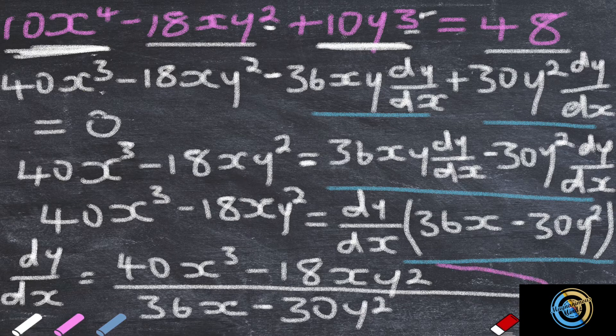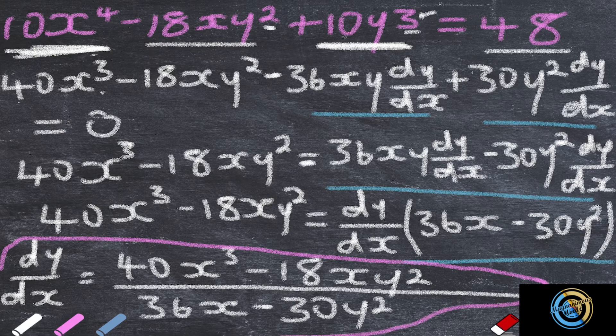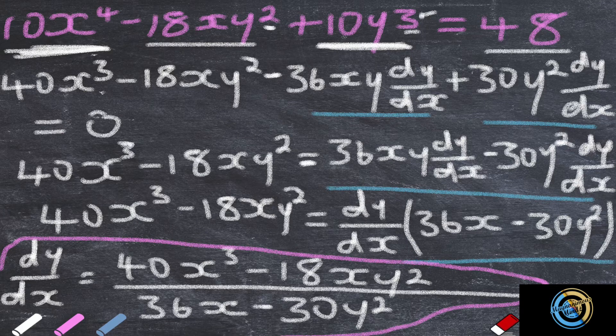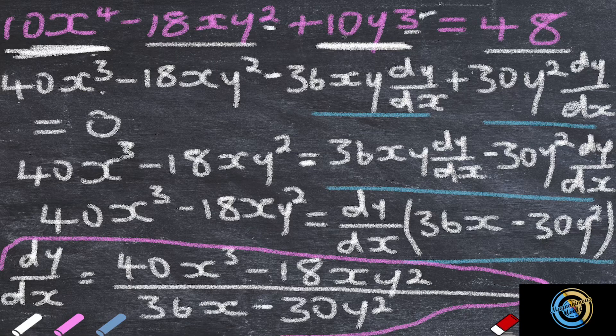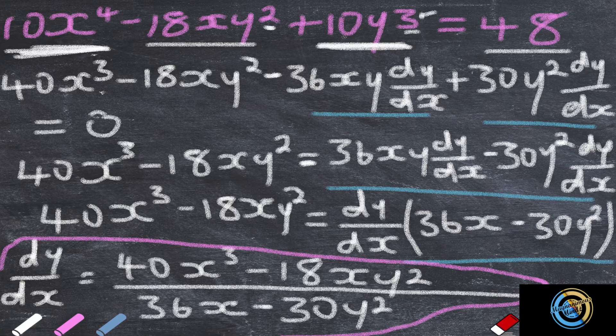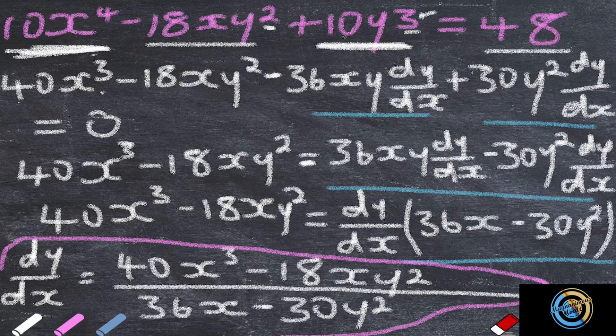So our dy over dx is 40x cubed minus 18xy squared, all over 36x minus 30y squared. And that's it for this question.